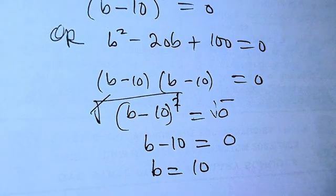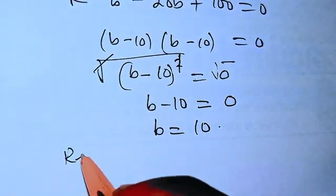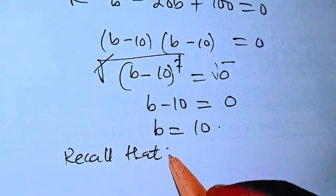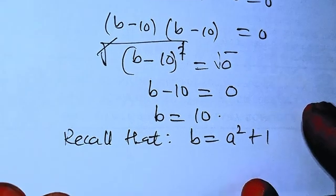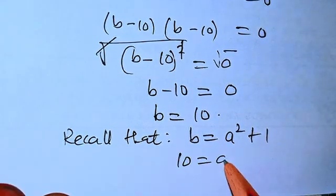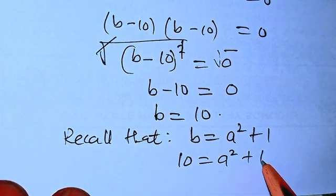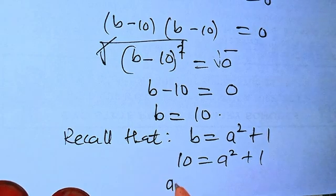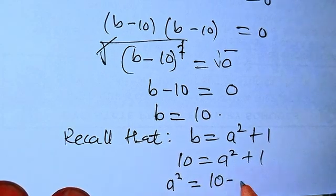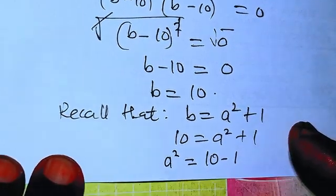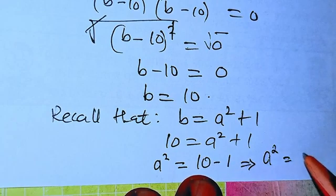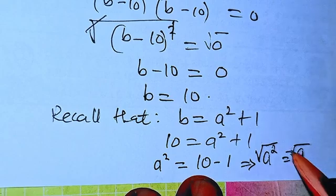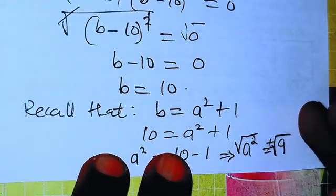So we need to recall that we've already stated up there that B should be a squared plus 1. So since B is 10, we have a squared plus 1. So therefore we need to transpose this one to the other side. We have a squared equals 10 minus 1. So therefore we're going to have a squared to be equals 9. Taking the square root of both sides, we're going to have plus or minus. A will be plus or minus 3. Then we have our solution.